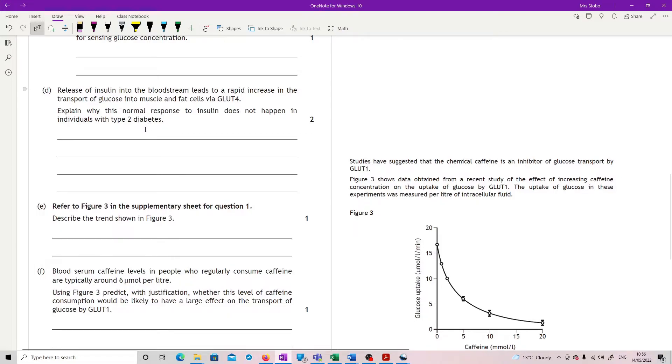For part D: Release of insulin into the bloodstream leads to a rapid increase in the transport of glucose into muscle and fat cells via GLUT4. Explain why this normal response to insulin does not happen in individuals with type 2 diabetes. Okay, so you need to know just the differences in here. They've got no information in the tables or the definitions, you just need to know it. So what you're expected to know is that with type 2, it is the receptor.